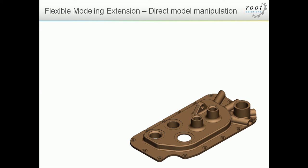So why would users require these new capabilities? I'm going to go through a few of the use case scenarios where flexible modeling would be a great help to many users. Large models with lots of features can sometimes be extremely cumbersome to work with. It can be very difficult to track down a particular feature, or you may have a number of features spread out through the history of the design that relate to a particular area of your product. Getting to each one of these features could be extremely tricky and sometimes cause downstream problems with other features.